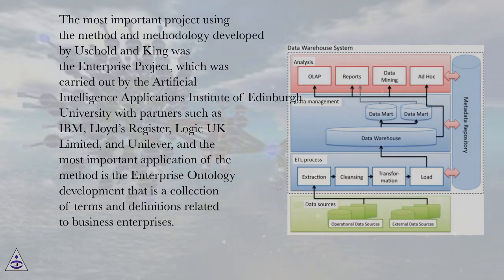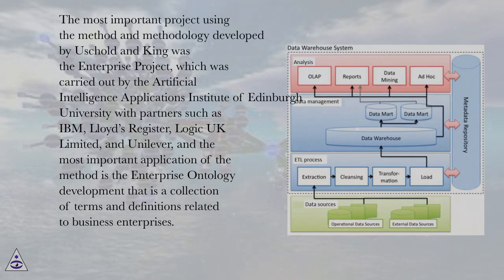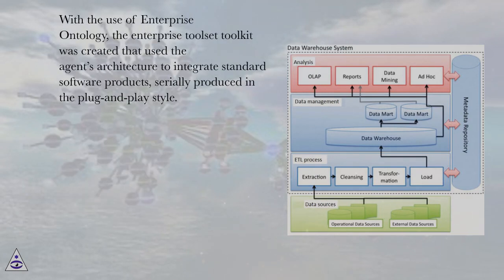The most important project using the method and methodology developed by Haskold and King was the Enterprise Project, carried out by the Artificial Intelligence Applications Institute of Edinburgh University with partners such as IBM, Lloyd's Register, Logic UK Limited, and Unilever. The most important application is the enterprise ontology development — a collection of terms and definitions related to business enterprises. With its use, the enterprise toolset toolkit was created, using an agent architecture to integrate standard software products produced in the plug-and-play style.